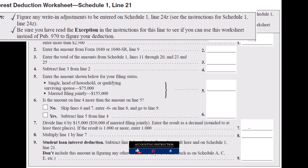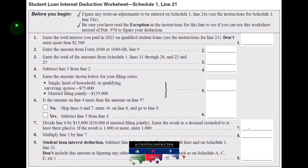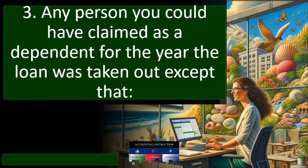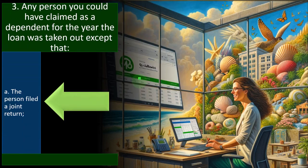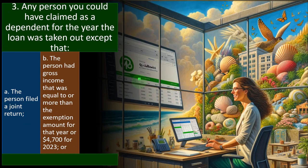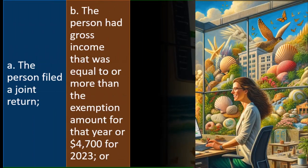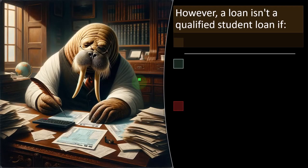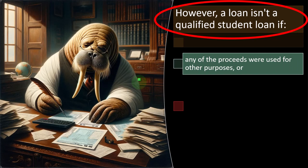This is the student loan deduction worksheet — we'll go through the calculation more in the software example in a following presentation. Also qualifying: (3) any person you could have claimed as a dependent for the year the loan was taken out, except that (a) the person filed a joint return, (b) the person had gross income equal to or more than the exemption amount — $4,700 for 2023 — or (c) you or your spouse, if filing jointly, could be claimed as a dependent on someone else's return.